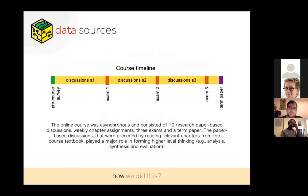The course was online and asynchronous and consisted of 10 research paper-based discussions, weekly chapter assignments, three exams, and a term paper. They were assigned a paper, the same across all four semesters. I'm dividing sets of discussions like the discussions which were before a specific exam. So discussions S1 pertain to content which comes in exam 1 and so on. The term paper is they have to select some specific portion of discussions which they like and write a review paper or original research based on it. So it's a pretty advanced course.